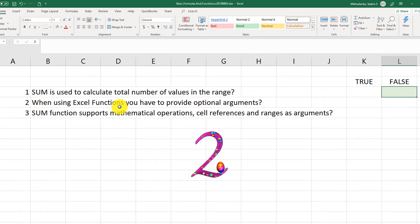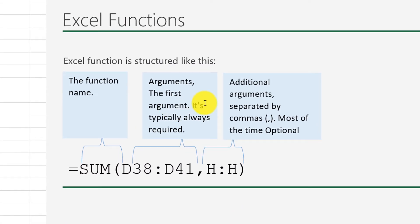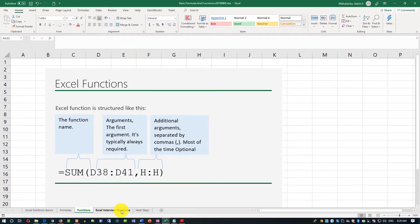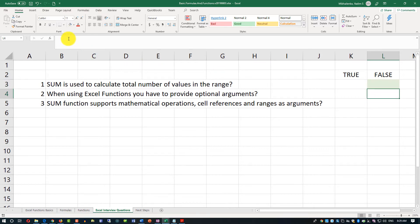Question two: when using Excel functions, you have to provide optional arguments. The answer is false. As we've seen, functions have two types of arguments: mandatory arguments, typically in the first part of the function, and optional arguments that come after. You do not have to supply optional arguments, but you must supply mandatory arguments. That's why the answer is false.